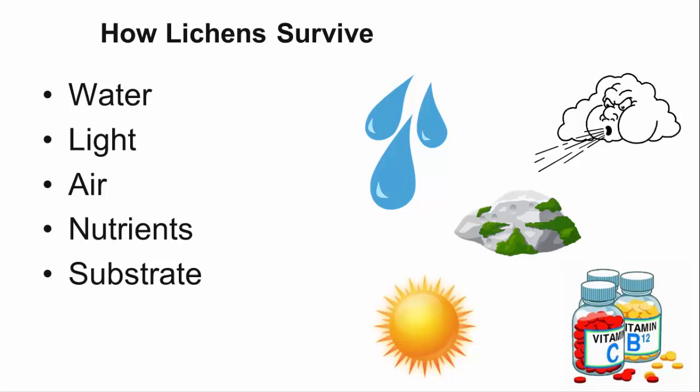And finally, lichens need to have a substrate on which to live. This could be a tree, rock, soil, old cars, or just about any inanimate object.